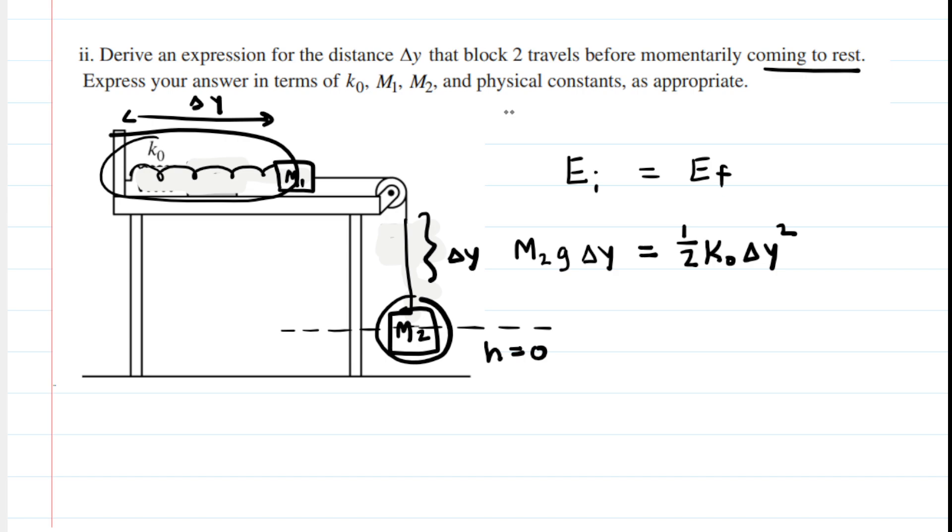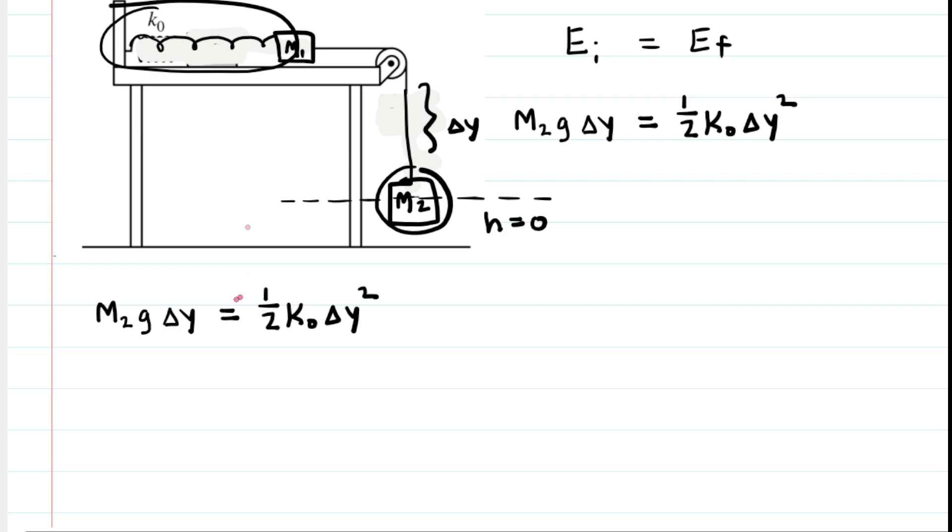Now, our goal is to derive an expression for delta y. So we're going to do that right now. And let's move the equation down so we can tinker with it. There we are. And it's kind of interesting because delta y appears on both sides of the equation. If we divide both sides of the equation by delta y, we could cancel out a delta y on the left-hand side. And then we can cancel out one factor of delta y on the right-hand side.